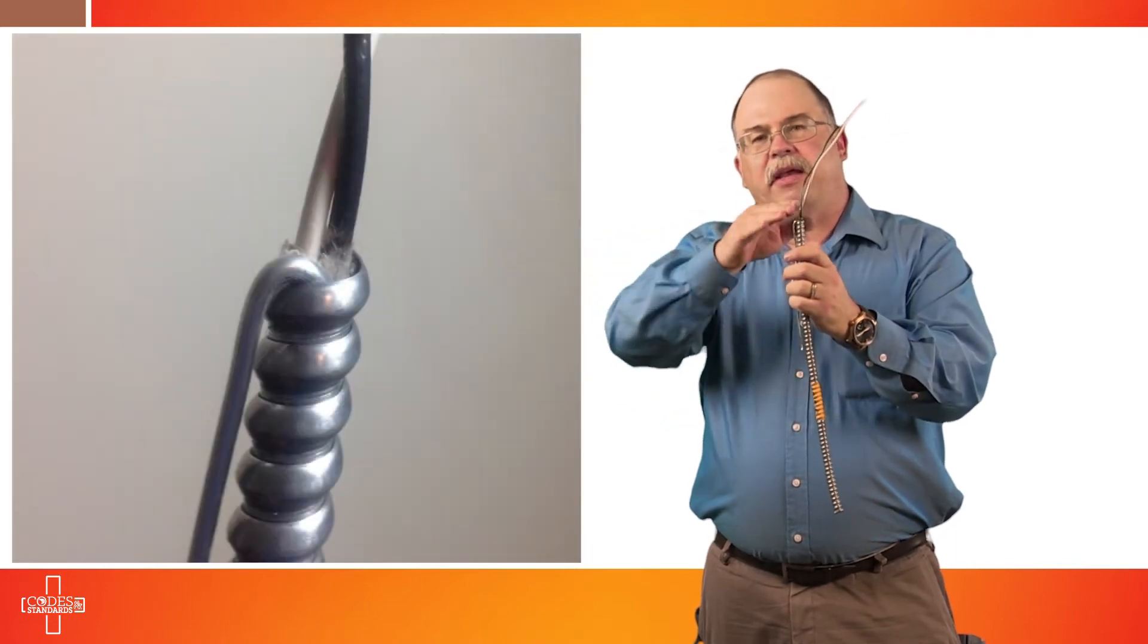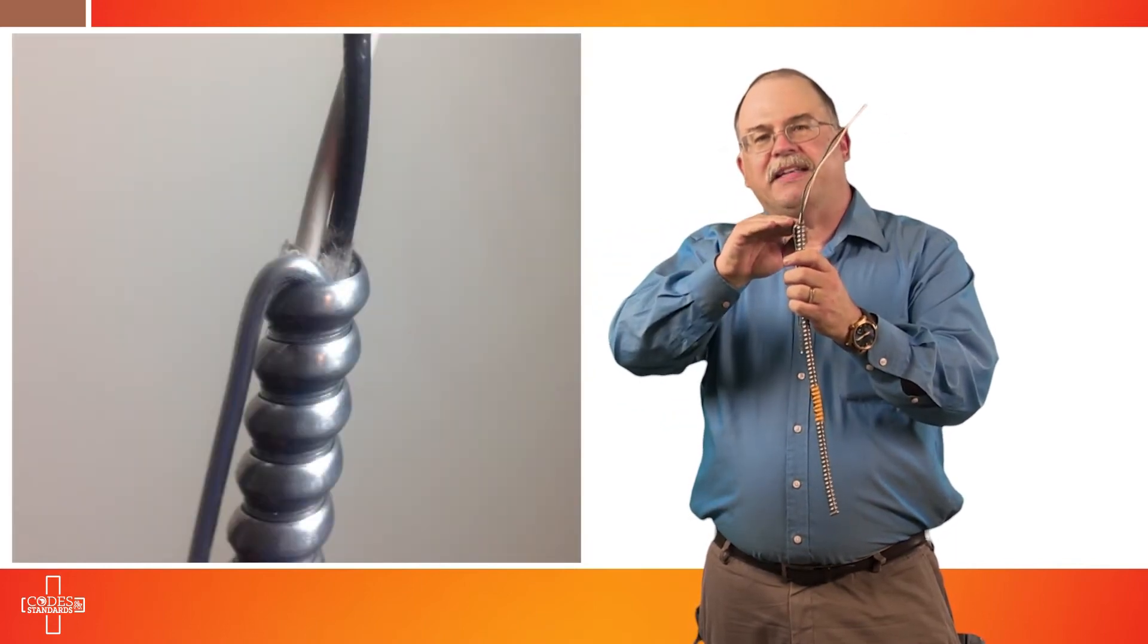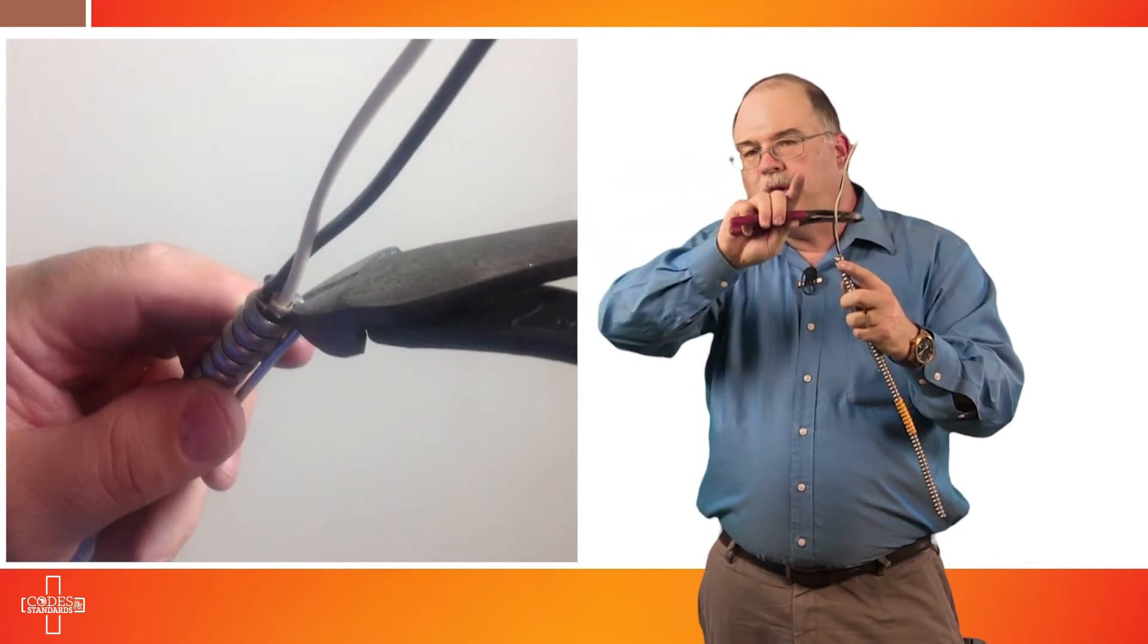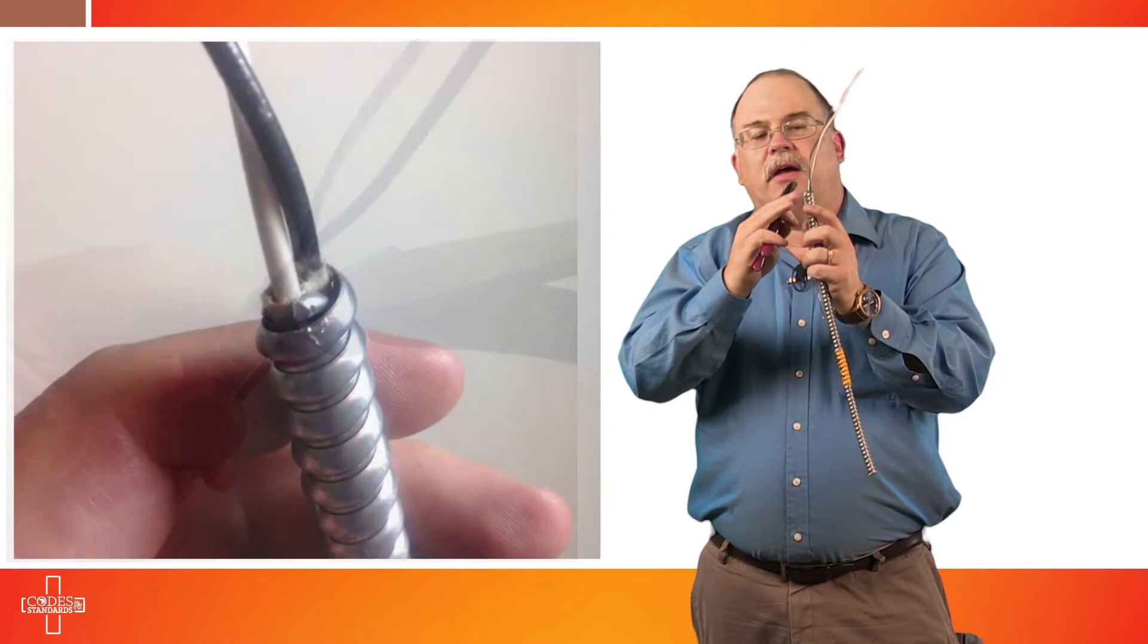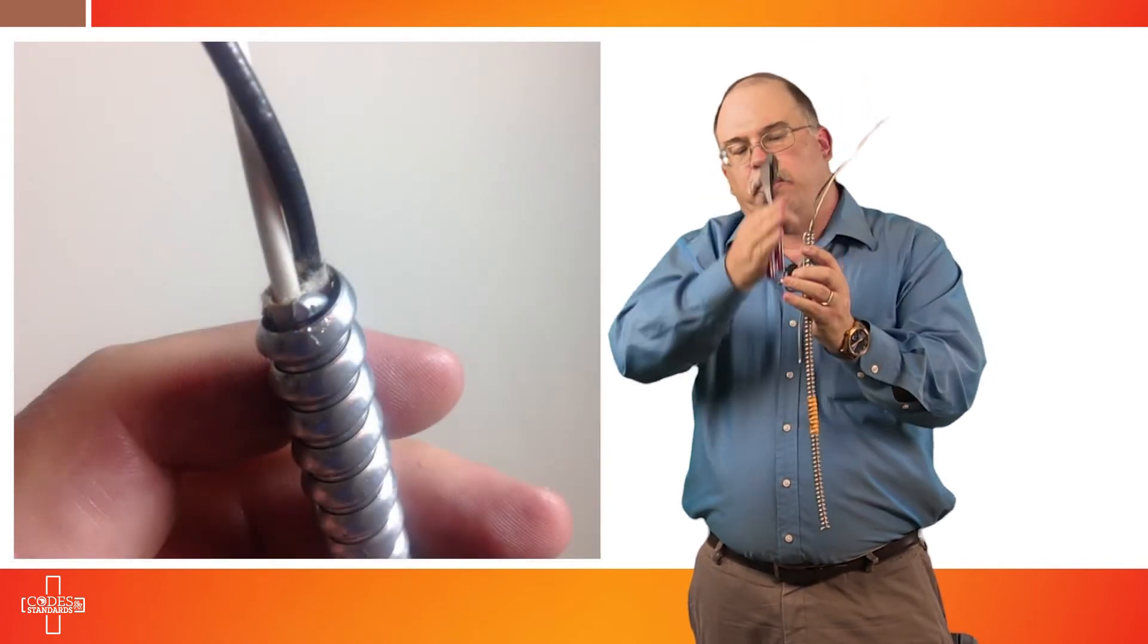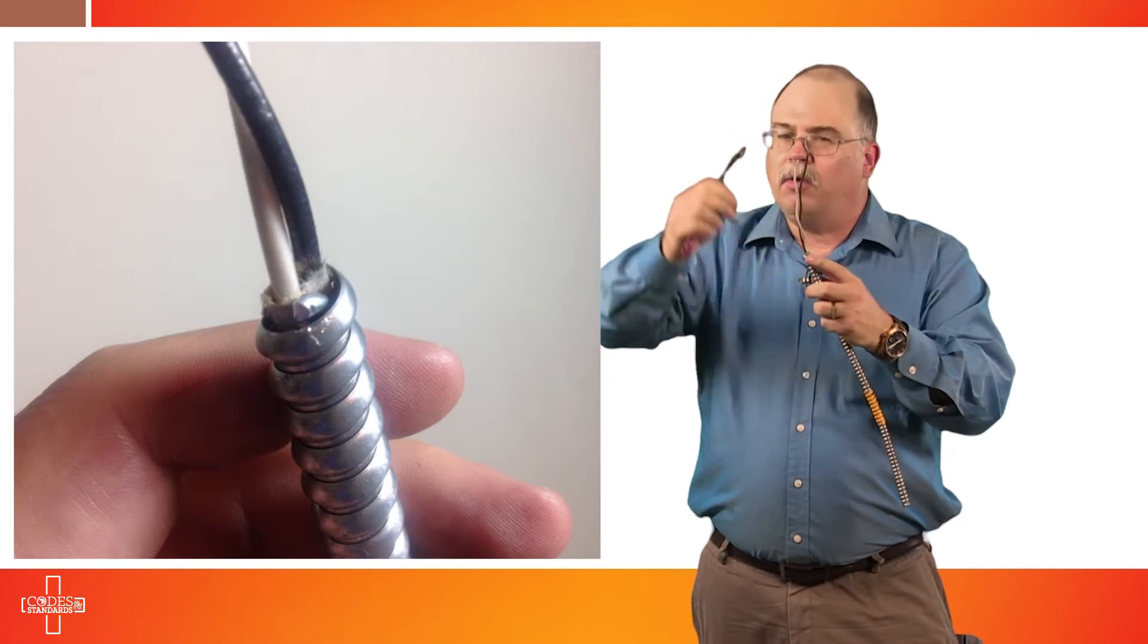And what that does is it creates this bend right at the top of your metallic sheathing. The next thing you're going to do is you're going to take your diagonal cutters again and you're going to cut off right at the point where it starts to bend, making sure that you don't leave any of this aluminum grounding slash bonding conductor protruding past the outer perimeter of the cable. That way we'll keep it from inhibiting the fitting from sliding down on the cable properly.